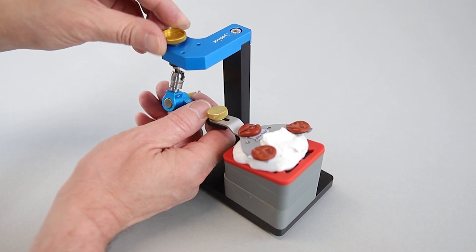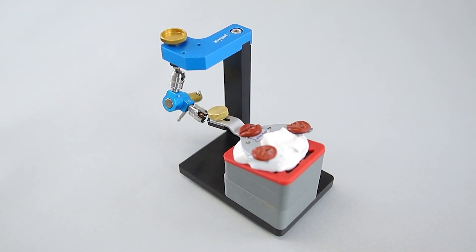Take care that the position of the bite fork doesn't change during the fixation process, and that the bite fork is in solid contact with the plaster. Now wait until the plaster is hardened.